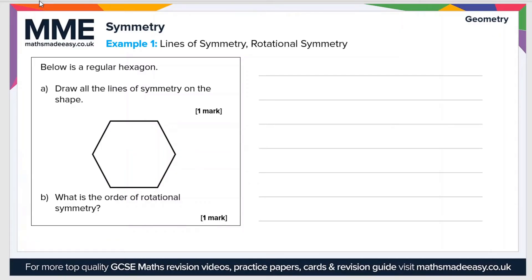This is an example question. Below is a regular hexagon. Draw all the lines of symmetry on the shape. Well, it's a regular hexagon which has six sides, so therefore there should be six lines of symmetry. Let's draw them all on. First, let's go corner to corner. Those are the first three lines of symmetry, drawing them all as dashed lines.